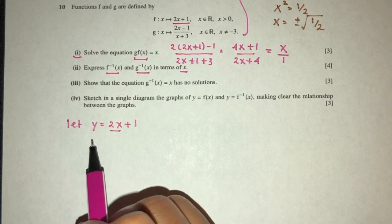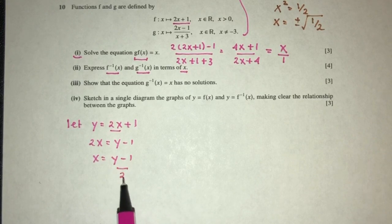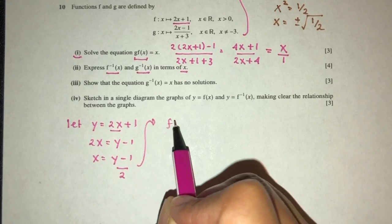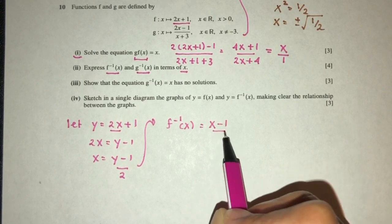Then make x become subject, you have 2x equal to y minus 1, x will be y minus 1 divided by 2. From this, we conclude f inverse of x, it is in terms of x, we have to write x minus 1 over 2.